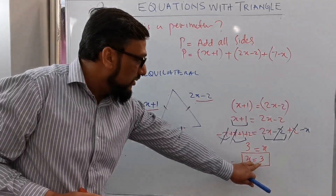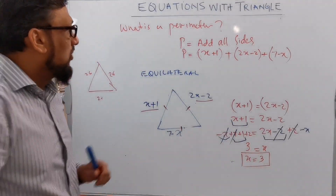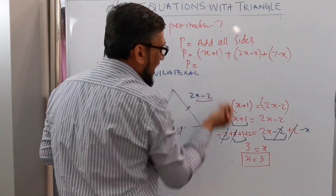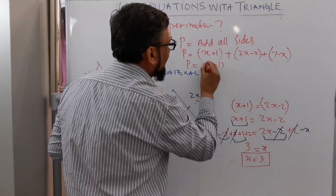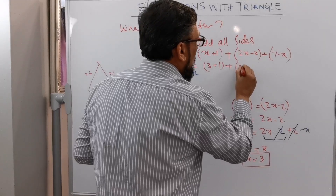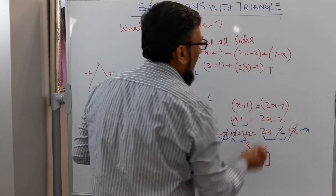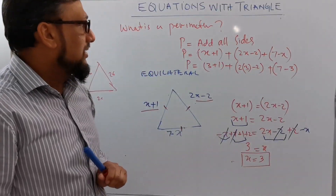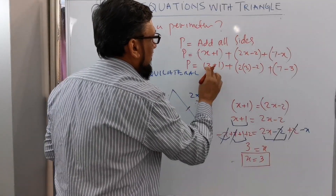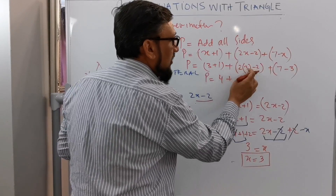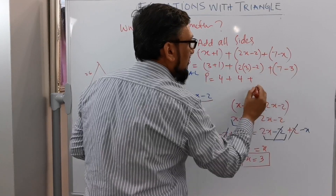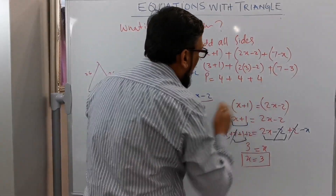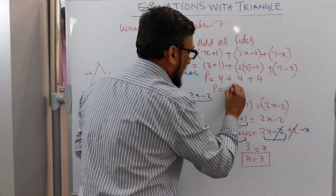Now we can substitute this value of x into the equation. All sides are equal, so: perimeter equals x plus 1, which is 3 plus 1; plus 2x minus 2, which is 2 times 3 = 6, minus 2; plus 7 minus x, which is 7 minus 3. Simplifying: 3 plus 1 is 4, 6 minus 2 is 4, and 7 minus 3 is 4.